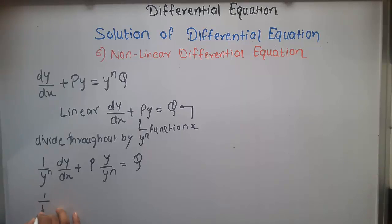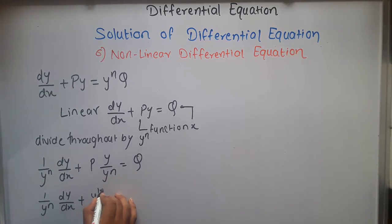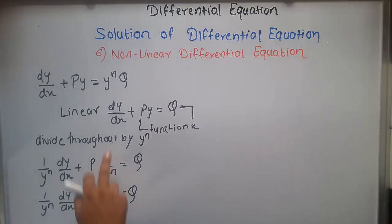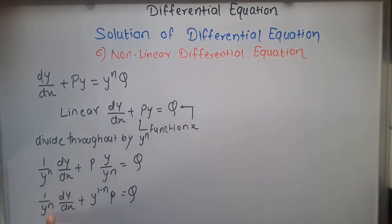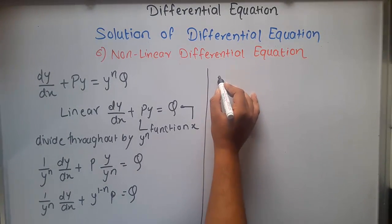This gives us (1/y^n)(dy/dx) + y^(1-n) · P = Q. This is our new equation, but it is still not in the form of a linear differential equation, because we require only dy/dx but we have (1/y^n)(dy/dx). So for that we make a substitution.